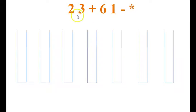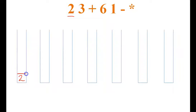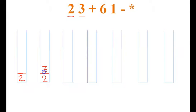Let us start the push and pop operations on the stack. The first element is 2, so I will push it on the stack since it is an operand. The next element is 3 — it is also an operand — so I will push it on the stack after 2. So 3 becomes the topmost element in the stack.